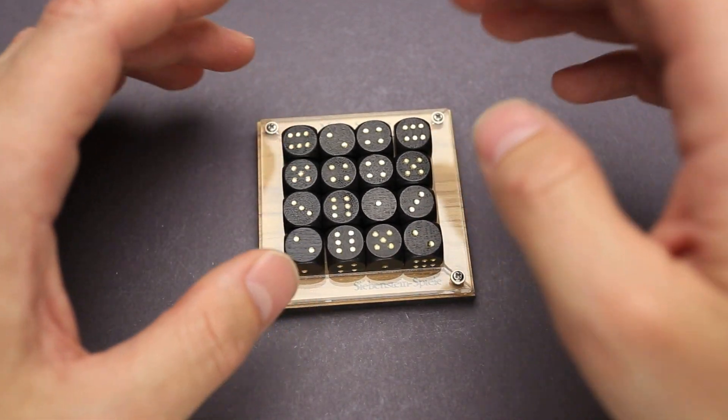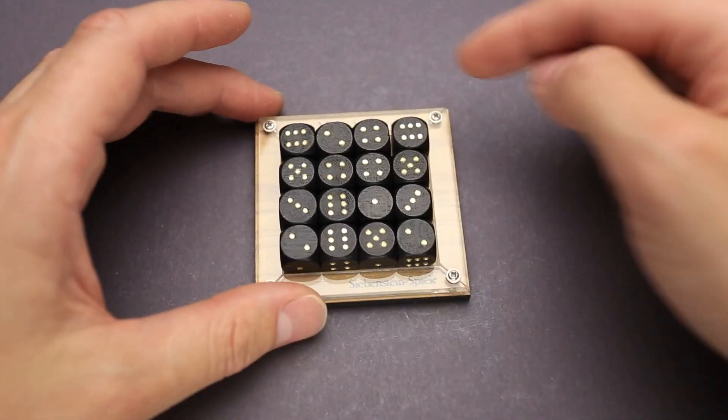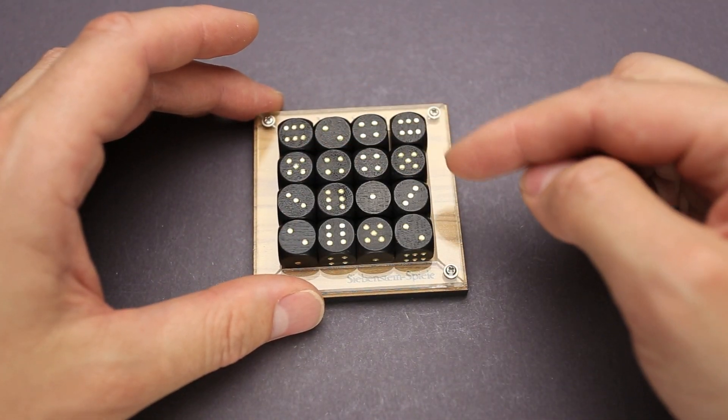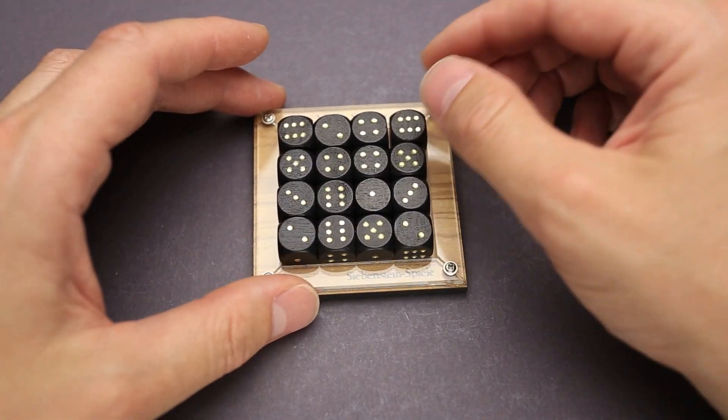The Magic Square 4x4 is an extremely difficult puzzle, since it is not that easy to find the correct sum of each column, row, and diagonal.